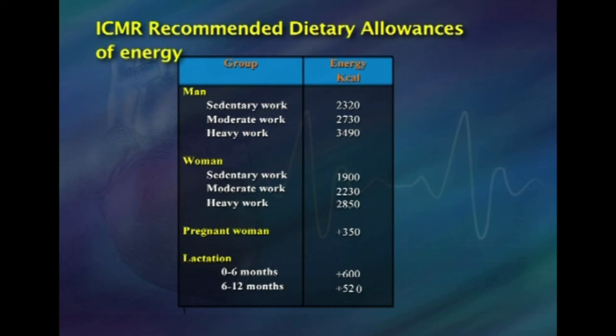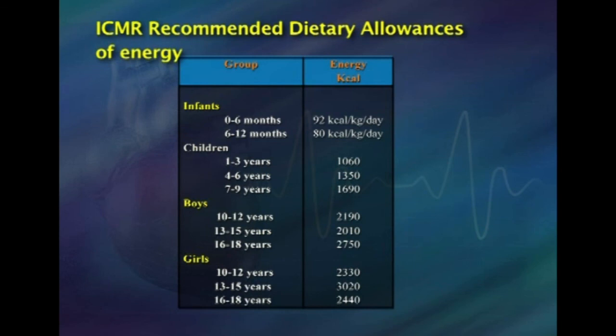The ICMR recommended dietary allowances for energy based on work category: for men, sedentary workers require 2320 kcal, moderate workers 2730 kcal, and heavy workers 3490 kcal. For a pregnant woman, an addition of 350 kcal is recommended apart from the regular amount. For lactating women, an additional 600 kcal is recommended for 0–6 months and 520 kcal for 6–12 months. Since energy requirements for infants are high, 0–6 months requires 92 kcal/kg body weight/day, and 6–12 months requires 80 kcal/kg body weight/day.